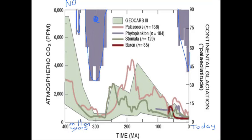So there's the history, and you could think of this as a history of temperature. There was no ice because it was warm. There was ice because it was cold. There was no ice because it was warm. There was ice because it was cold.